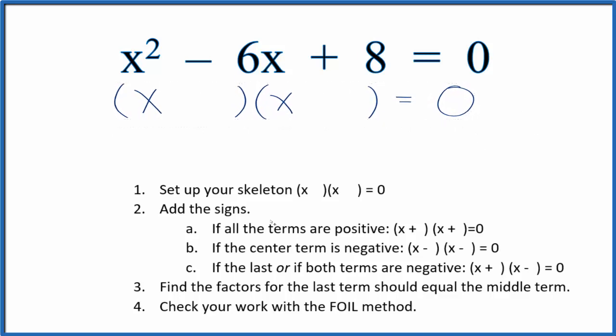Now we can add the signs into the skeleton equation. We have this negative 6x, and if the center term is negative, we're going to have two negative signs right in the middle there. Once we've done that, we can find the factors for this last term here. We're looking for the factors of the last term, and they're going to equal the middle term.